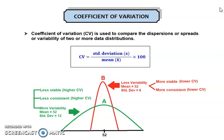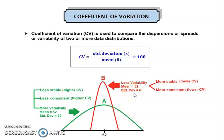Now look at two distributions with the same mean value. Distribution A, the green one, has a mean equal to 52. Distribution B, the red one, also has a mean equal to 52. But notice that these two distributions have different standard deviations. Distribution B has a standard deviation of 6, while distribution A has a larger standard deviation of 12.